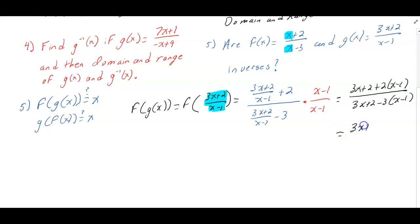Simplifying 3x plus 2 plus 2x minus 2 divide by 3x plus 2 minus 3x plus 3, doing a little bit of algebra I get 5x over 5 which is equal to x. So what I just validated here is that f of g of x is actually equal to x.